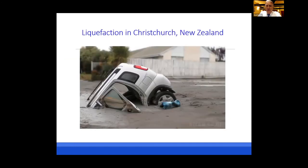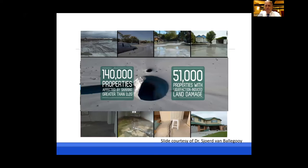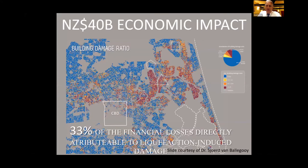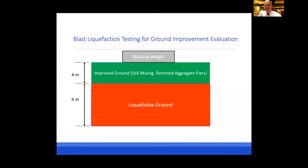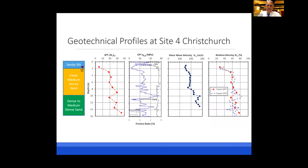Then came the Christchurch, New Zealand earthquake — with this iconic photograph of liquefaction and sand ejecta. There was damage to 51,000 structures from liquefaction, with an economic loss of $40 billion, about a third of which is attributed to liquefaction-induced damage. The New Zealanders wanted to see if they could improve a zone of soil about four meters thick to support the soil weight and let the soil beneath that improved zone liquefy, minimizing differential settlement at lower cost.